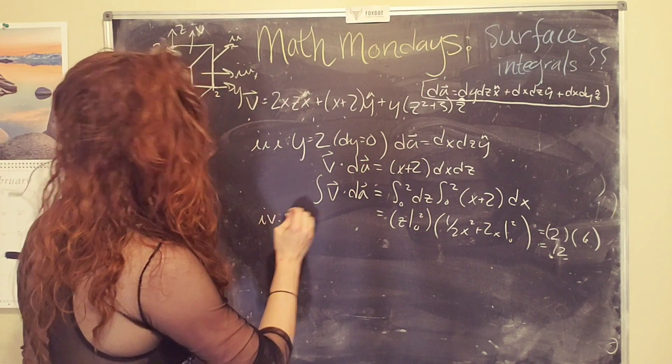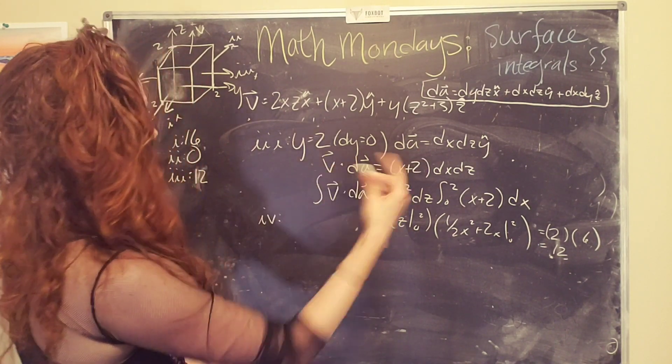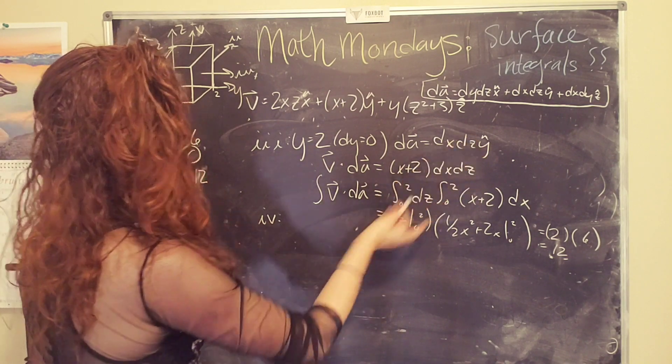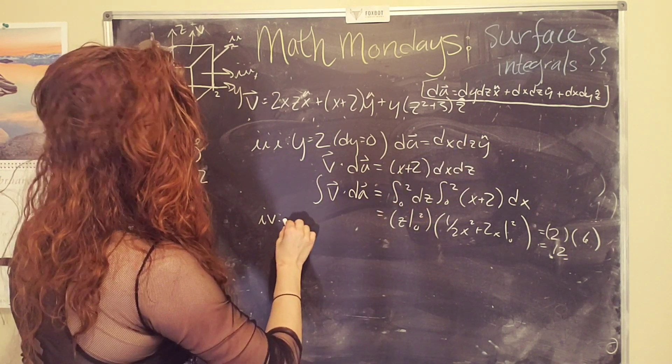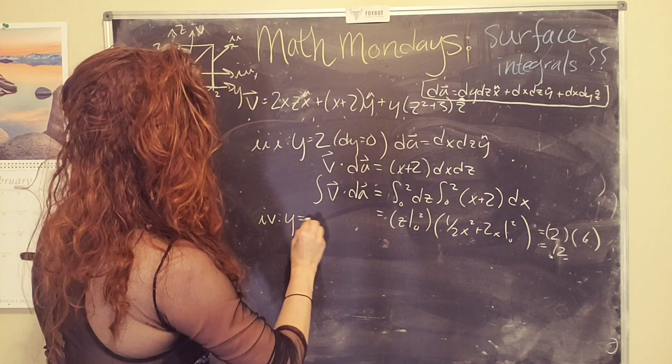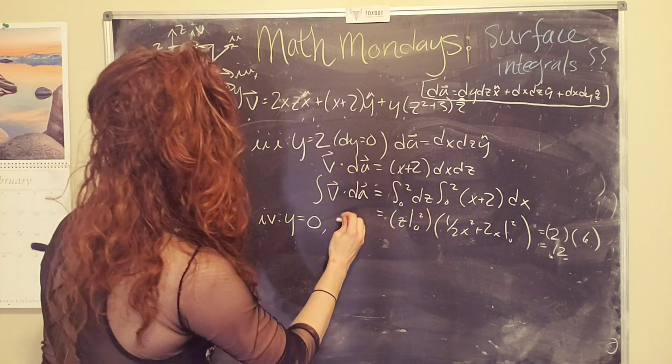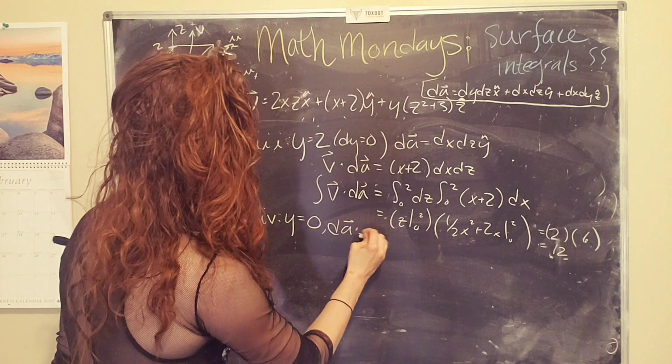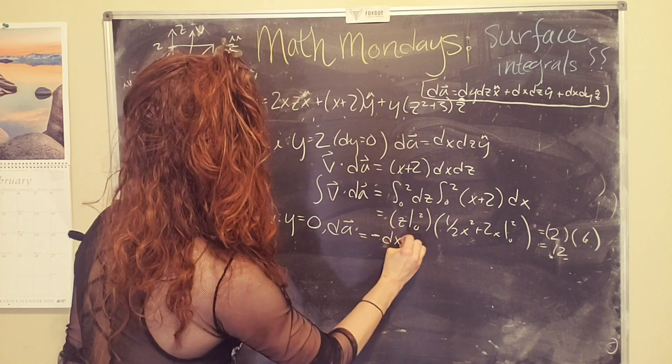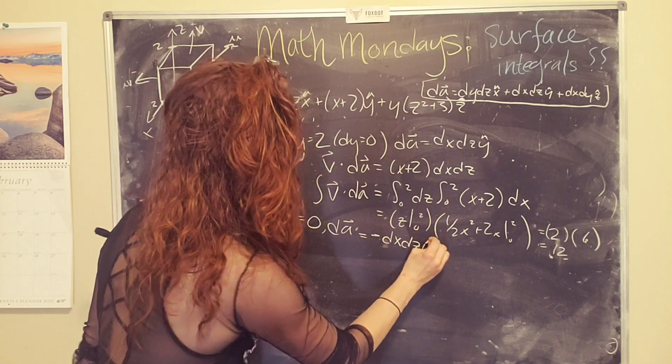So in this case, we have a dA that is negative dx dz y hat. So on this surface, y equals zero, dy is again zero and dA equals negative dx dz y hat. Okay.